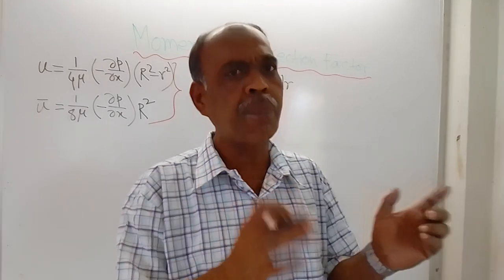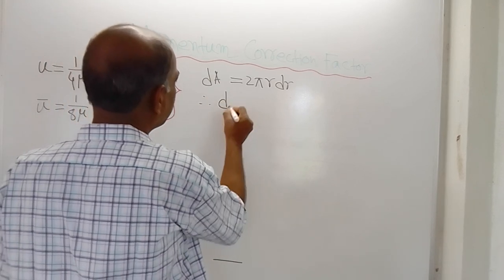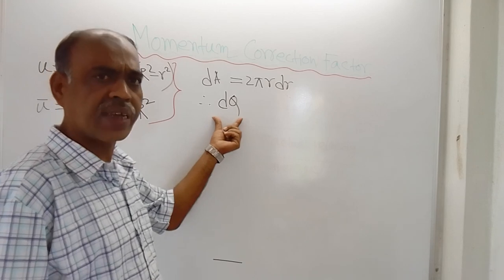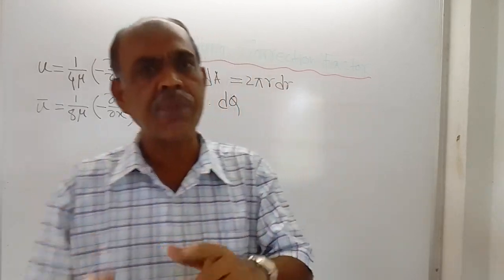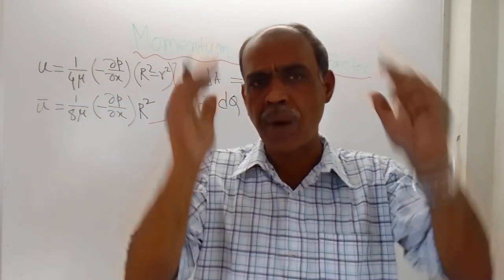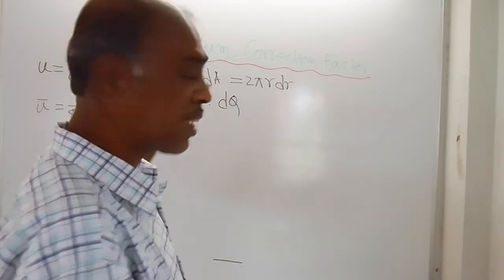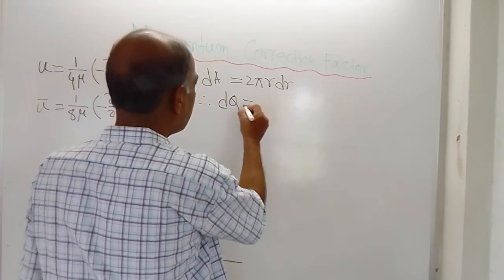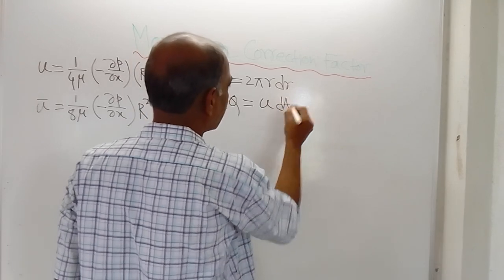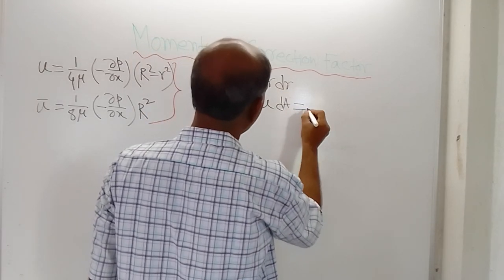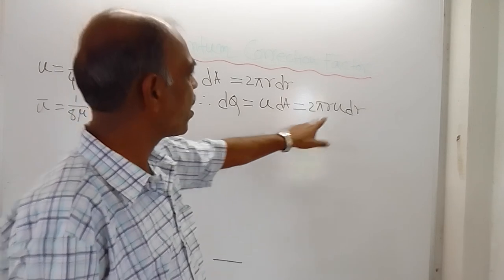Discharge can be measured as volume per unit time or mass per unit time. Here we are talking about volume per unit time: dQ = u · dA = 2πr·u·dr, where u is the actual velocity. We are dealing with incompressible flow in this chapter, meaning density ρ remains constant. Therefore, the mass flow rate is dM = ρ · dQ = 2πr·ρ·u·dr.